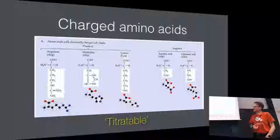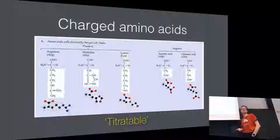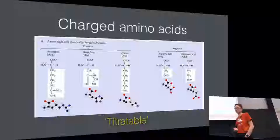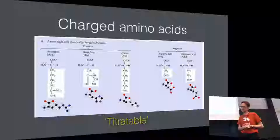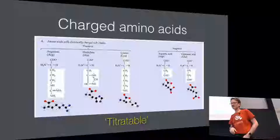We call these residues titratable. Just like acids and bases in upper secondary school, you can add or remove a proton based on the pH value. Depending on the surrounding pH, positively charged residues can become neutral and negatively charged ones can also become neutral, depending on whether you have very low or very high pH. This is important for ion channels — some are actually pH-gated, so if you change the pH, the channel will spontaneously open based purely on electrostatic interactions.